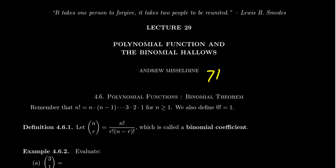For example, 7 factorial is equal to 1 times 2 times 3 times 4 times 5 times 6 times 7. That's this n factorial. Now it's the product of 1 up until the number if it's a positive number. If the number is actually 0, we define 0 factorial to be 1. We'll make some more sense of why that is in a little bit.